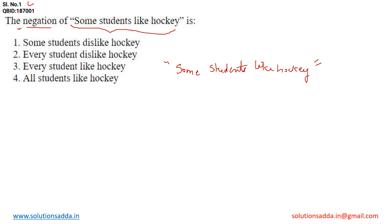In order to find the negation, we change 'some' to 'every'. So 'some students' becomes 'every students', and 'like' becomes 'dislike'. Hockey remains as it is. So the negation of the sentence becomes: 'Every students dislike hockey.'